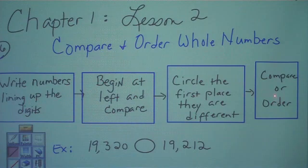This is the flow map which your child should have in their notebook. The first step is to write the numbers lining up the digits. The second step, begin at the left and compare. The third step, circle the first place they are different, or the children can use their highlighters and highlight that spot to make those numbers pop out.